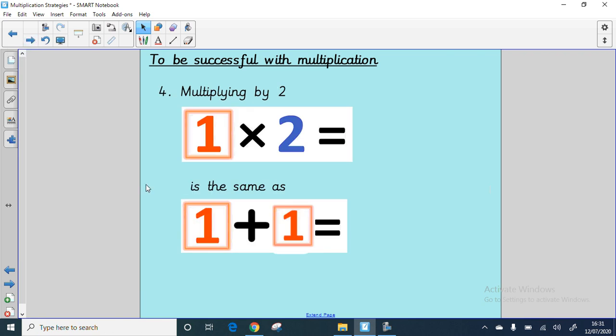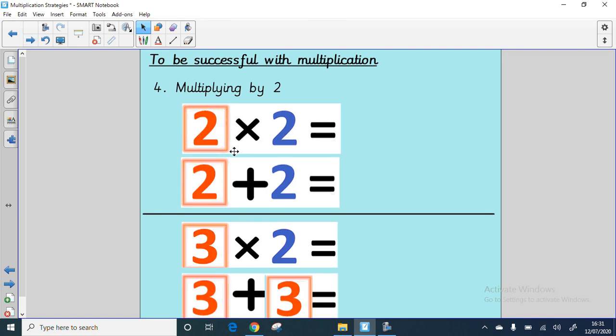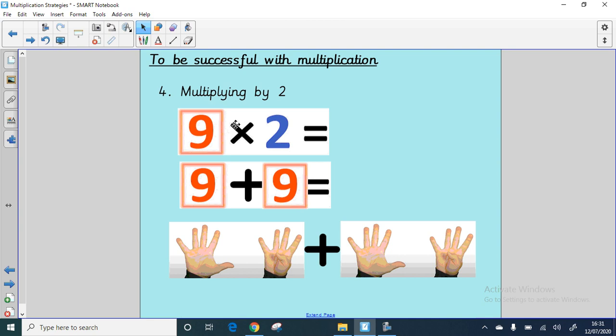Rule number four. Another easy one. Multiplying by two. One times two is, yes, it's two. One lot of two is two. And it's the same as repeated addition. So one plus one is two. Two times two is the same as two plus two. It is four. Three times two is the same as the number plus the same number again. Three plus three is six. Three times two is six. Nine times two is the same as the number plus the same number again. Nine. So there's two lots of nine. In fact, you can use your fingers for this.